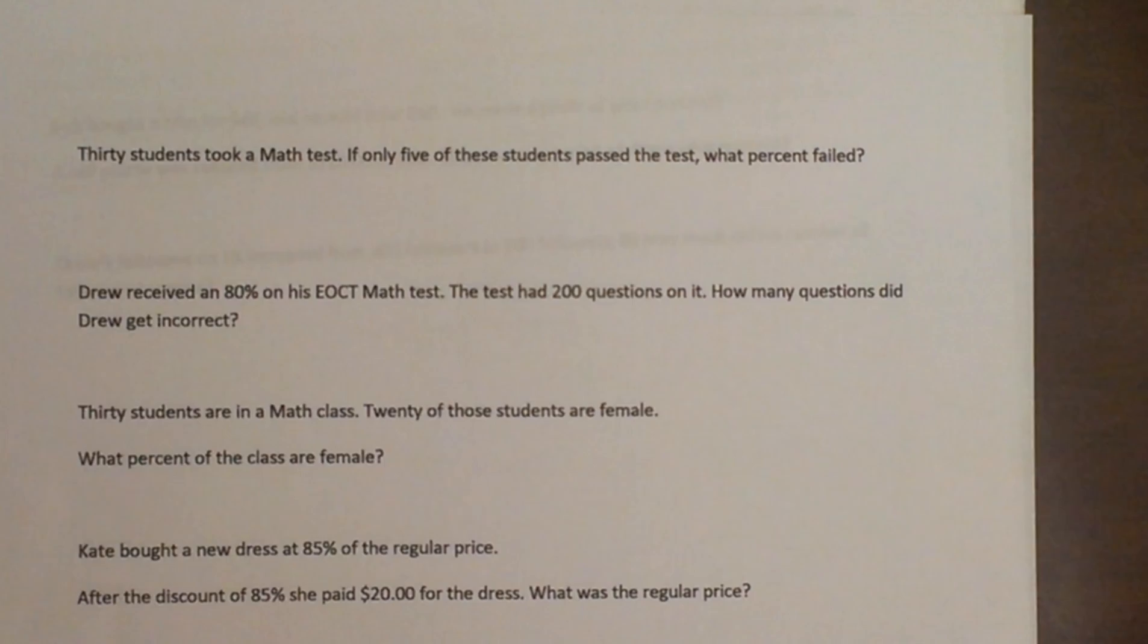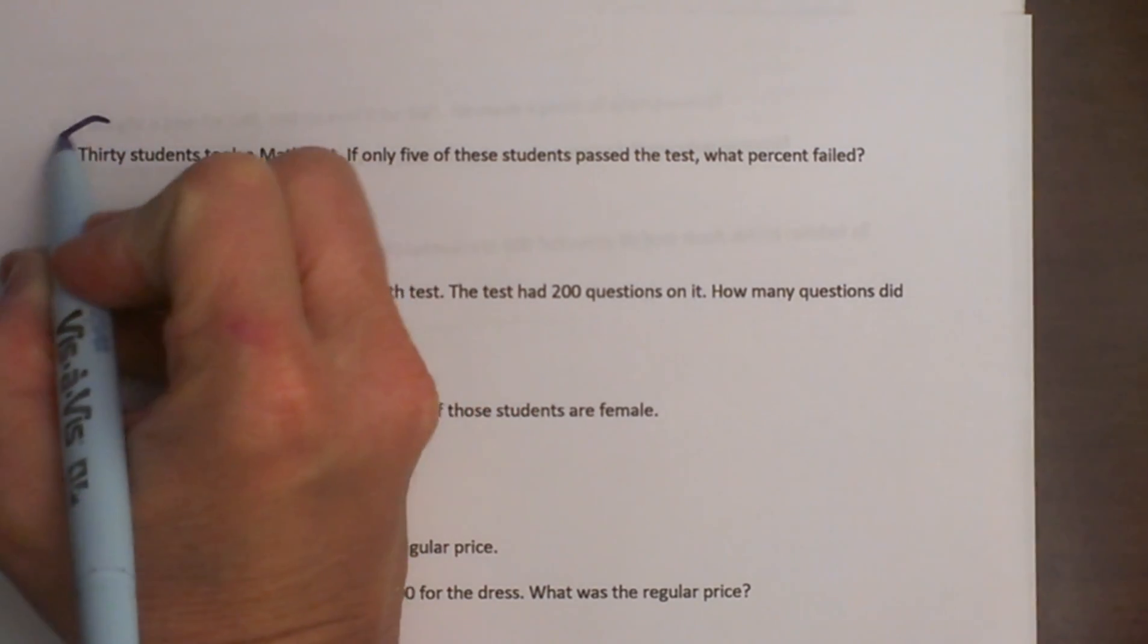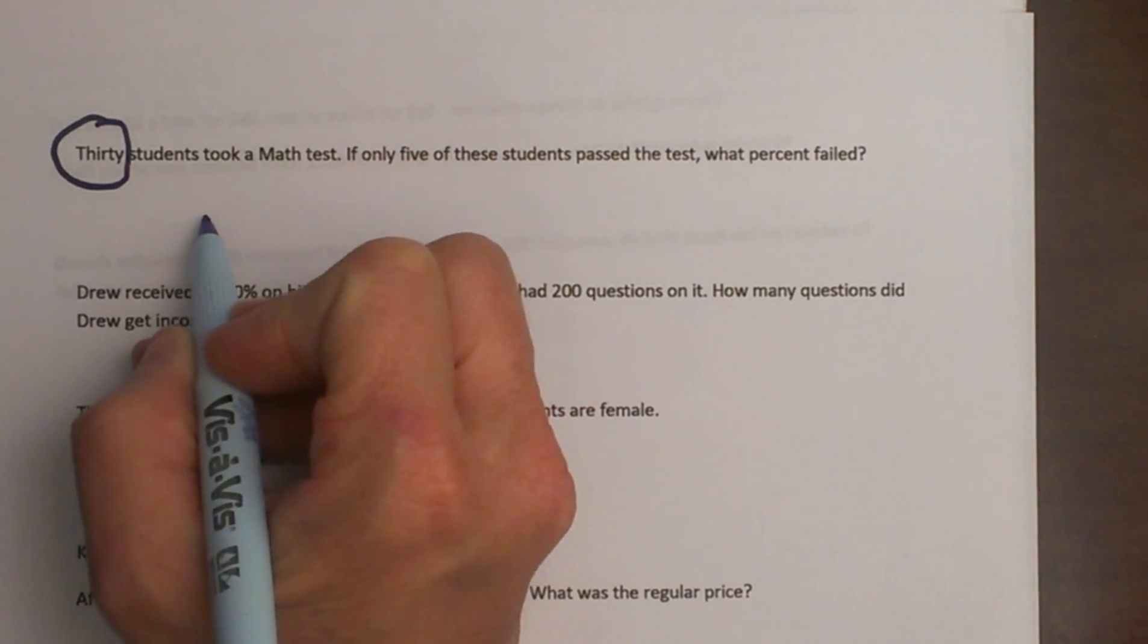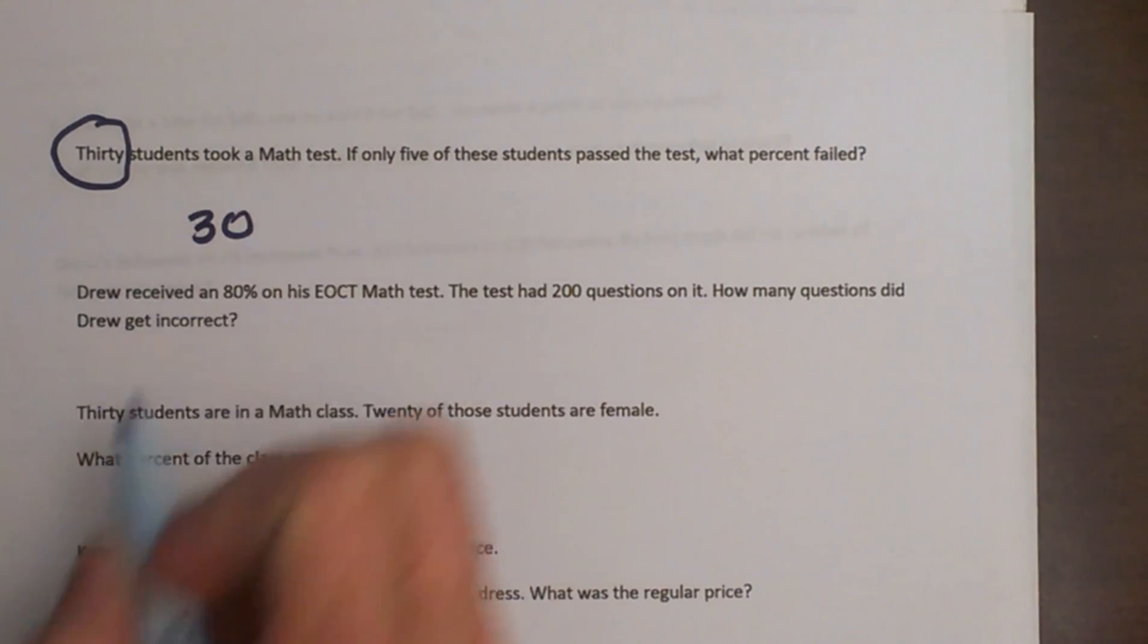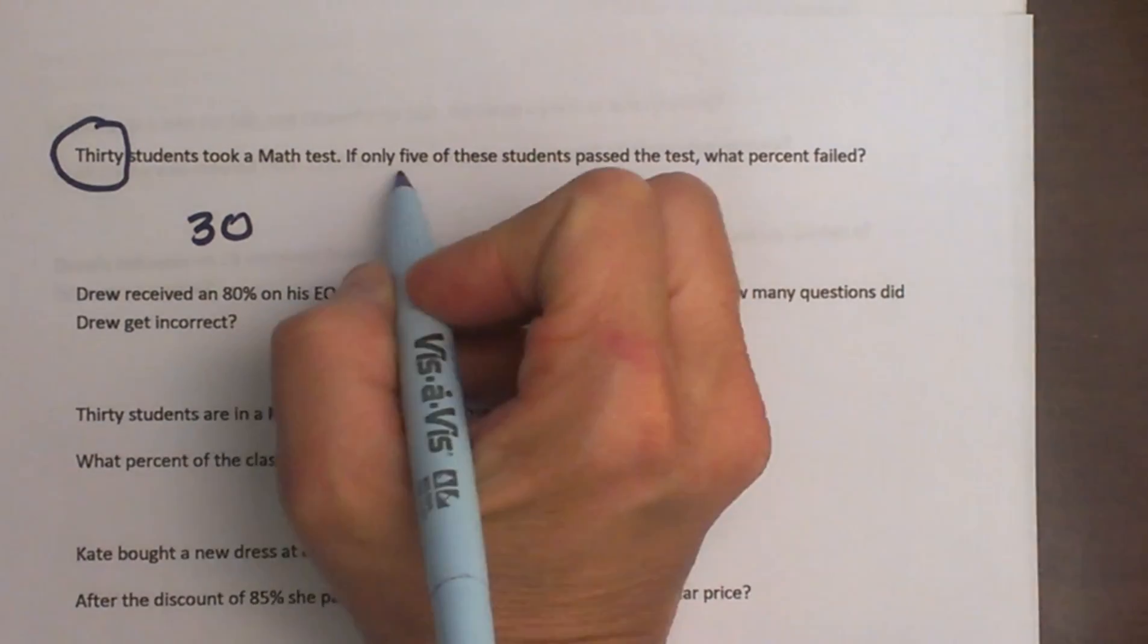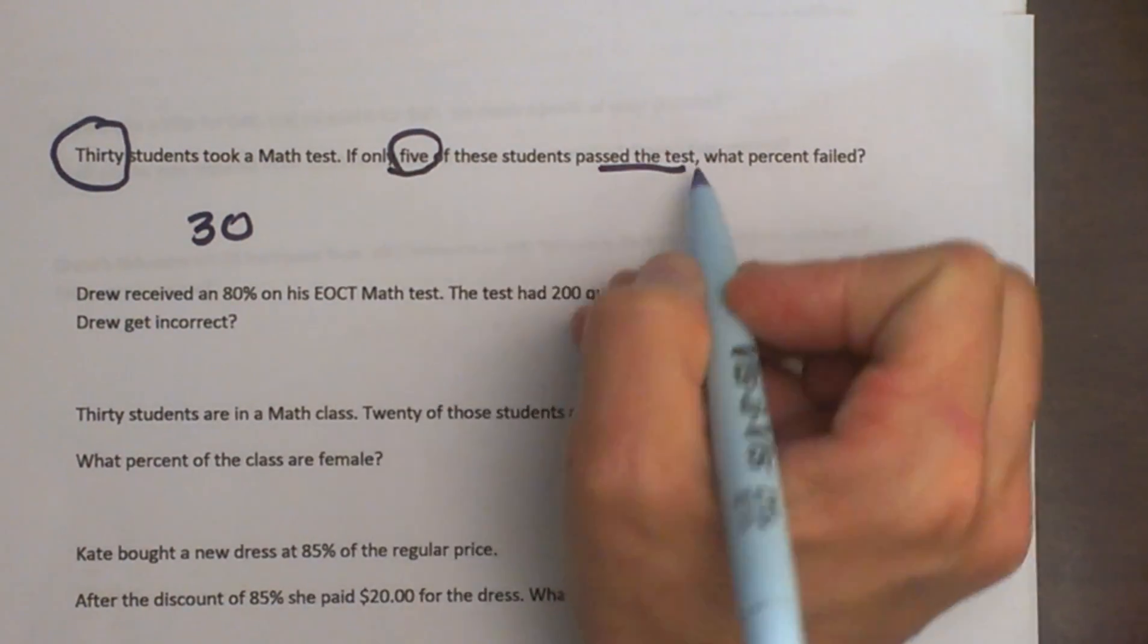In a word problem you want to circle the important information. How many kids do we have? We have 30 students. That is the total number of students. We can see that only 5 passed the test.